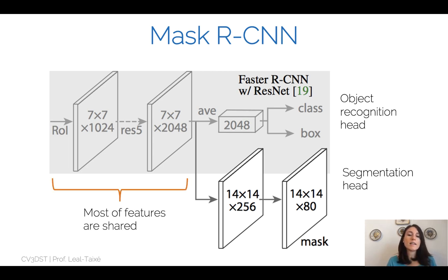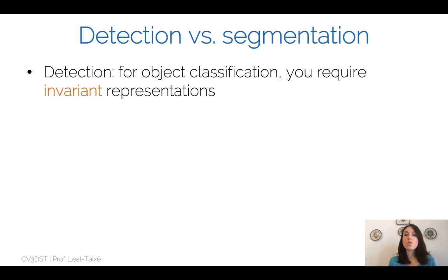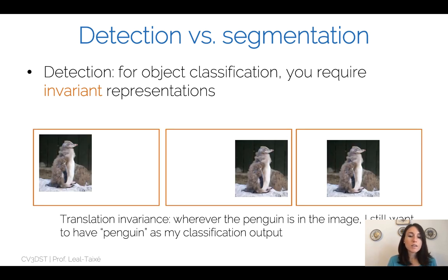The power of Mask R-CNN is that most features are shared — most computation is shared — adding only a few operations on top of Faster R-CNN to produce segmentation results. Now, can we use the same operations for both detection and segmentation? For detection, we want object classification: given a proposal box, is this a cat, a dog, or not an object? This requires invariant representations — specifically translation invariance — so wherever the penguin is in the image, it's still classified as a penguin.